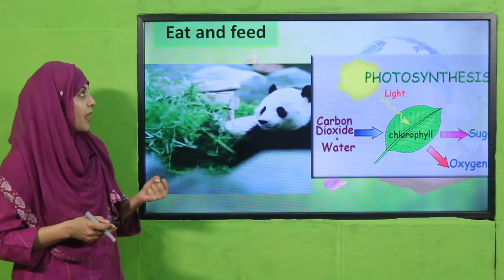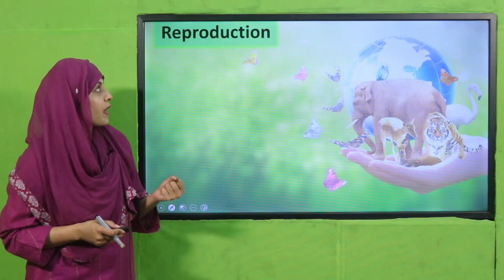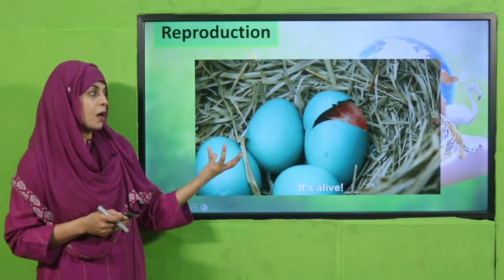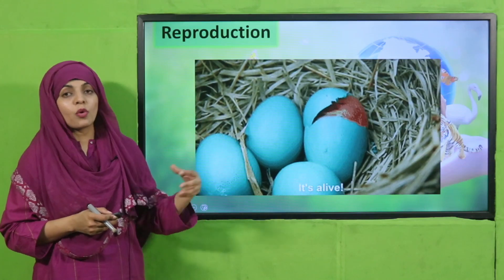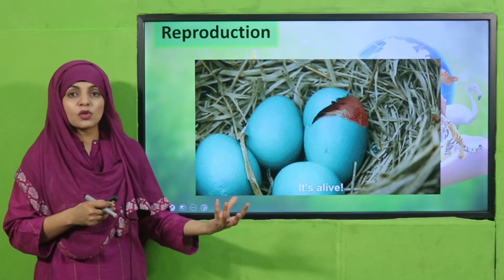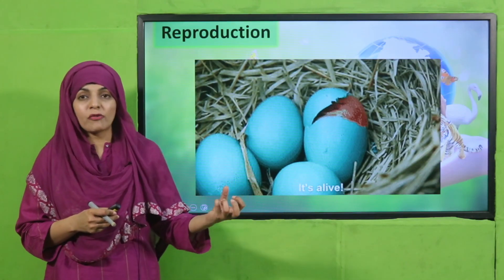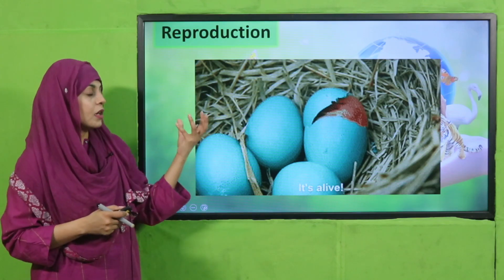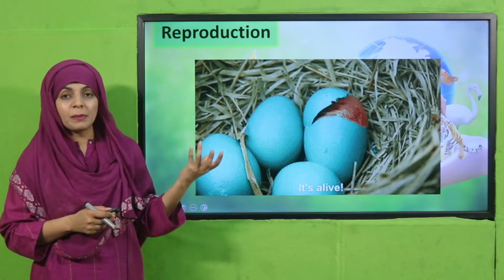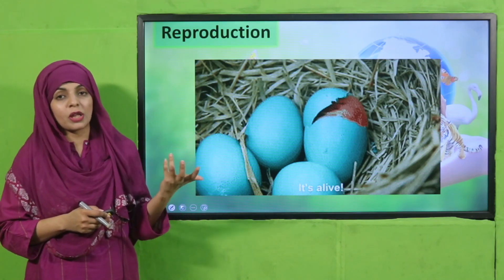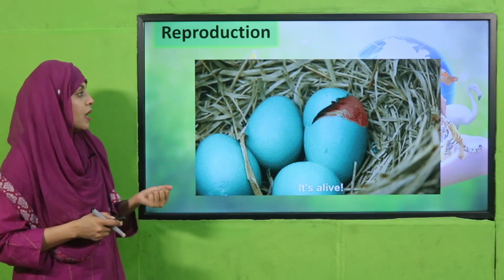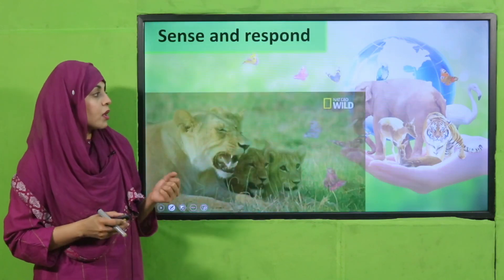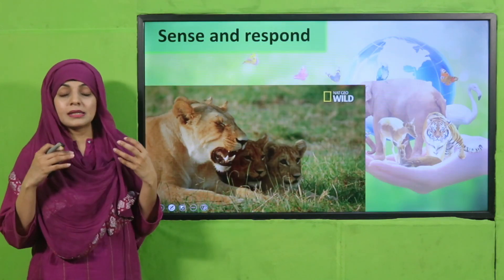Next is reproduction. Both plants and animals produce young ones. Plants produce young plants, and animals also have young ones. Both are able to reproduce and create new members of their species.